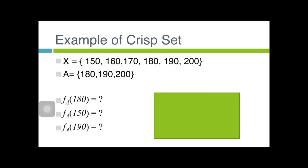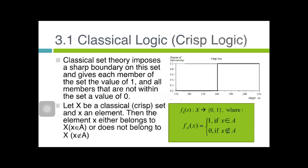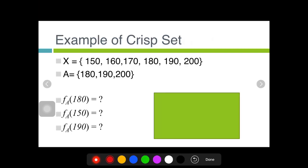We will see a clear example on crisp set here. We have universal set X with values from 150 up to 200. Then we have set A with these three values: 180, 190, and 200. If we use the membership function fa to find the value of x=180, what will it return?